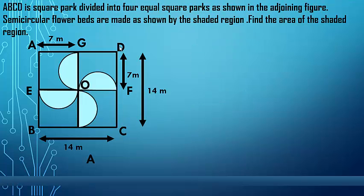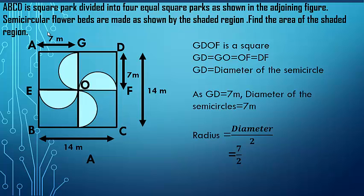To find the area of the shaded part, first we need to know the area of one semicircle. Then, as we need to find the area of four semicircles, we will multiply by four to get the area of the shaded region. The diameter of the semicircle is the same as the side of the smaller square parks. GD, which is the side of one of the smaller square parks, is 7 meters, so the diameter of the semicircle will also be 7 meters.